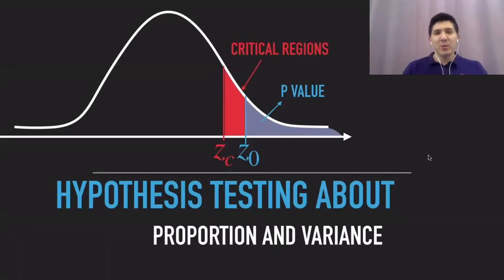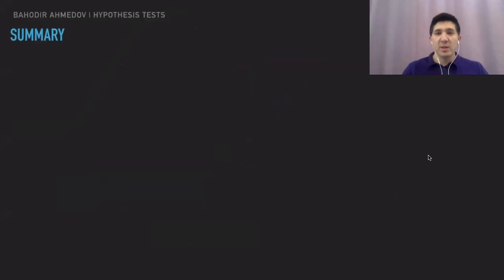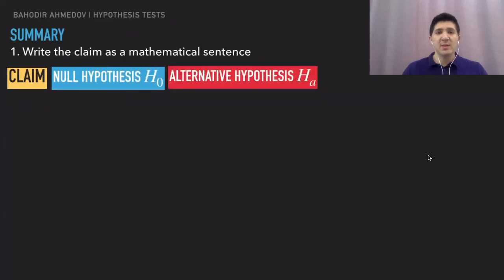Hi, my name is Mohader Ahmed, welcome to the course of probability and statistics. In this lecture we're going to continue our discussions on hypothesis testing, and in particular we're going to solve a problem on testing the hypothesis about the population proportion and another problem on testing the hypothesis on the population variance. Before we do this, we're going to briefly talk about the steps we need to perform in order to construct the hypothesis test.